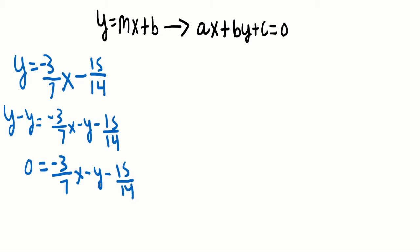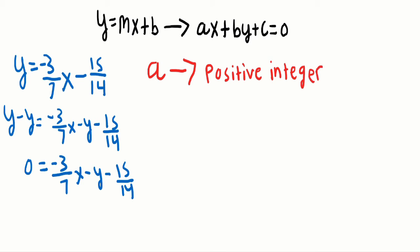Now we have to look at our A, B, and C values. A must be a positive integer, but here A is negative 3 over 7 — it's a fraction — and C is negative 15 over 14, also a fraction. Additionally, A is not positive, it's negative. What we have to do is use the same concept we use when solving an equation with fractions: take the lowest common multiple of the denominators of the fractions.